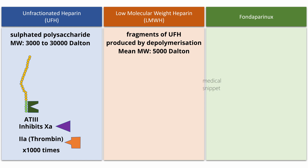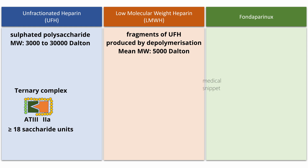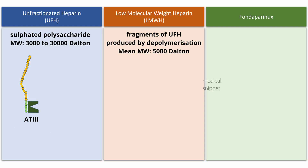There is a difference between the inactivation of factor Xa and thrombin by heparin. For inhibition of thrombin, that is factor IIa, heparin must bind both to antithrombin III and thrombin to form a ternary complex causing inactivation of thrombin. This ternary complex can be formed only by heparin having at least 18 saccharide units. But to inhibit factor Xa, heparin binding to factor Xa is not required — only binding of antithrombin III to heparin's pentasaccharide sequence is required. This difference in mechanism forms the basis of the difference between unfractionated heparin and low-molecular-weight heparin.